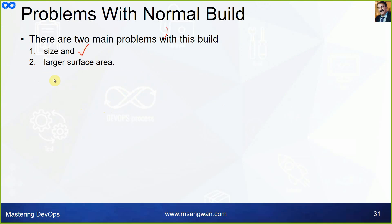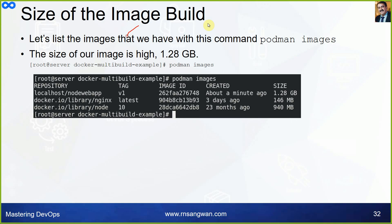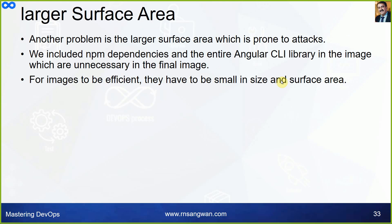You can also specify uppercase -P for a random port assignment, or specify any non-privileged port greater than 3000 or 30000. Once you run the command, you can see the result in the browser at the IP address followed by the port number. The application will be running — two main problems with this build are size and larger attack surface area.